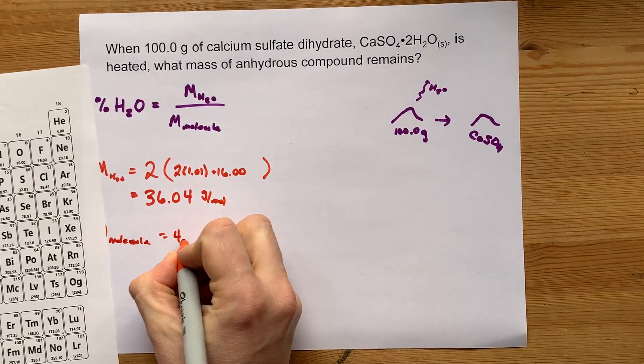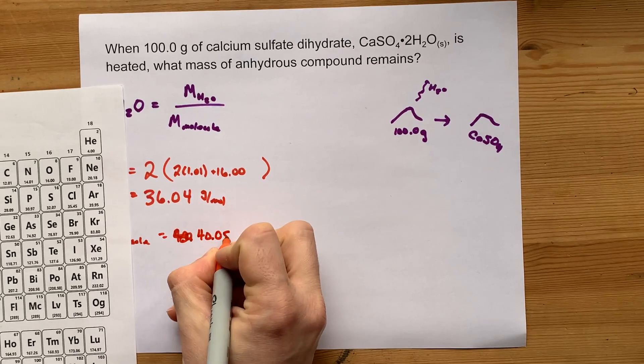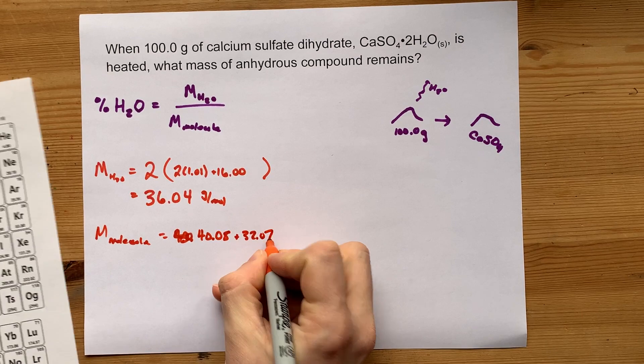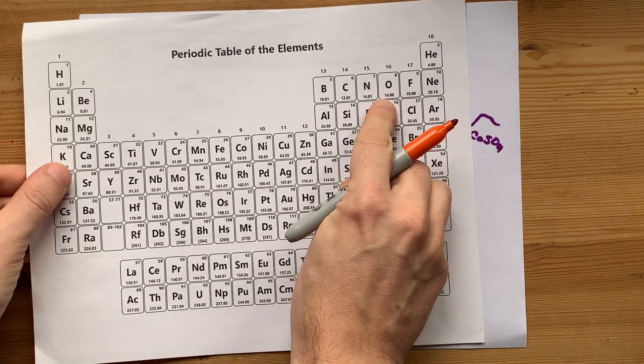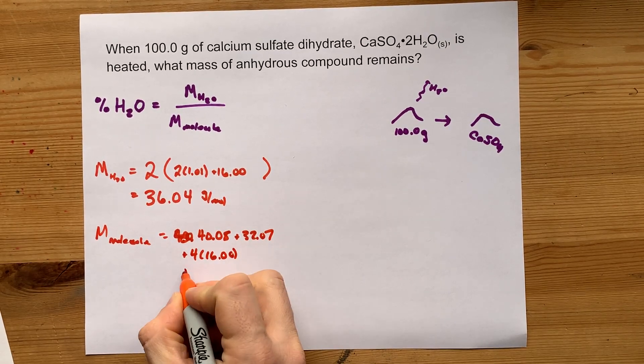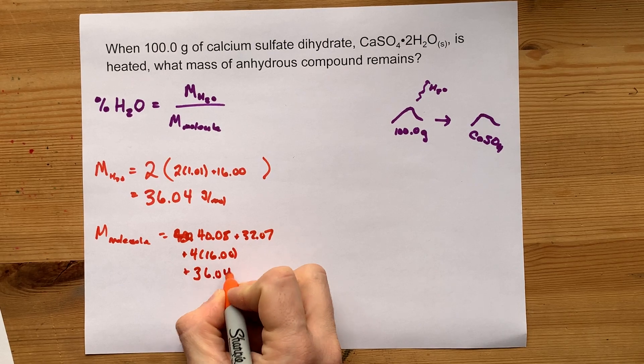Calcium is 40.08, sulfur is 32.07, four oxygens is four sixteens, and then the two H2Os—we've already calculated the mass of—it's 36.04.